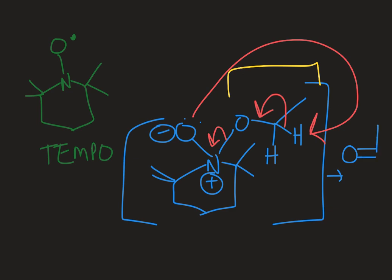Using green to number: here's carbon one and carbon two. So TEMPO facilitates the formation of that double bond to oxidize that carbon and go from an alcohol to, in this case, an aldehyde.